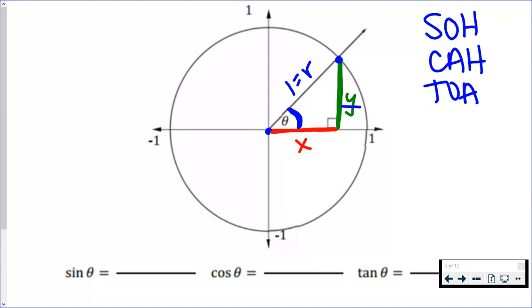which is just Y. So the sine of any angle in your unit circle is just the Y value of your ordered pair.